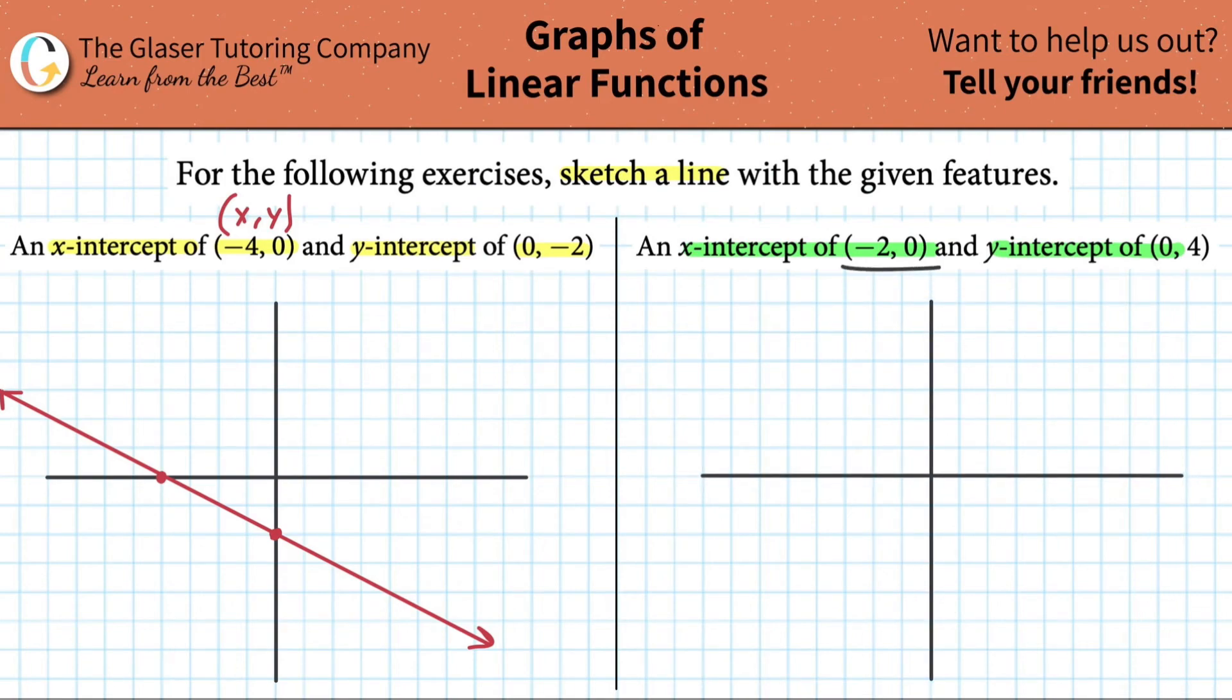Plot that right there. Let's plot the x-intercept. It's going to be negative 2, 0. So it's going to be right here. And then the y-intercept of 0, 4. So that's going to be up 1, 2, 3, 4 right there. And now draw your line.